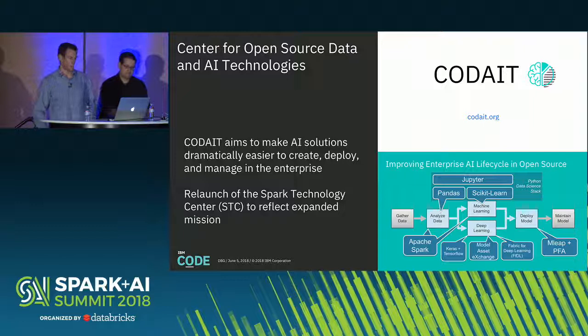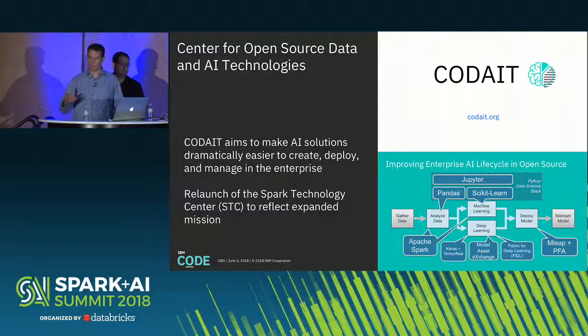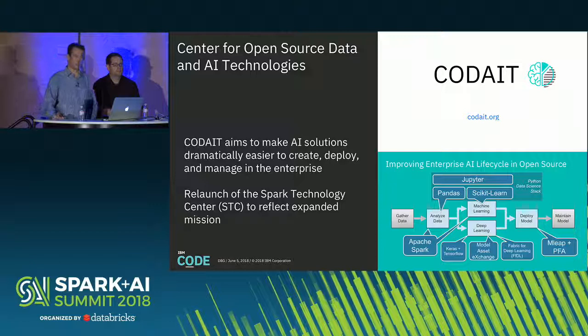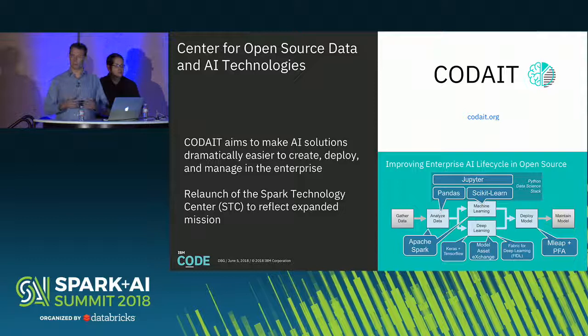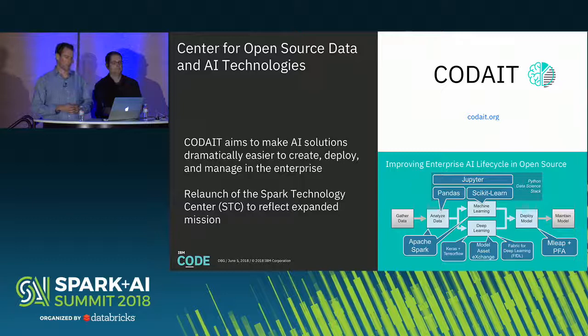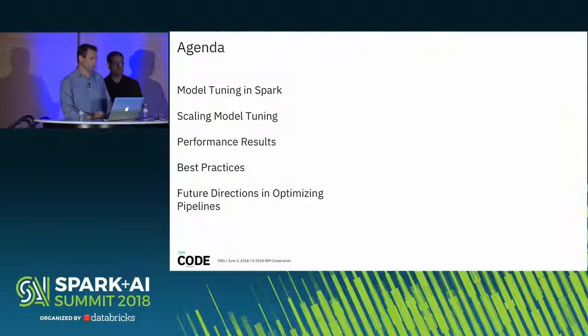A little bit about Code A: when I joined the IBM team a little over two years ago it was known as the Spark Technology Center, and the mission was really around Apache Spark and the surrounding ecosystem. Since then the team has been rebranded to Code A, and the aim is to simplify the end-to-end enterprise AI and deep learning lifecycle and workflow. This encompasses the Apache Spark ecosystem as well as the general Python data science stack and more recently deep learning frameworks. There are a couple of projects we've released: the Model Asset Exchange and the Fabric for Deep Learning.